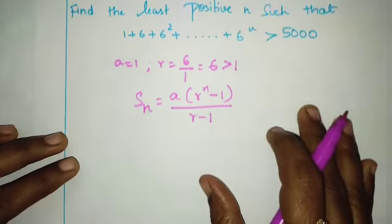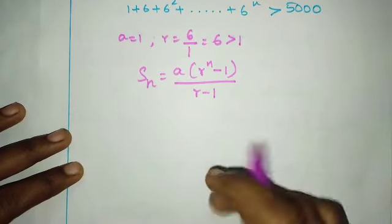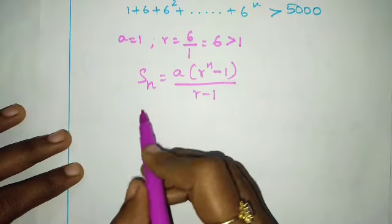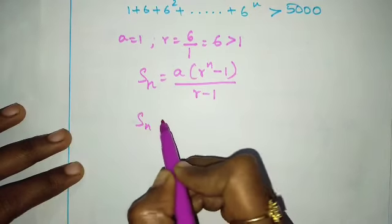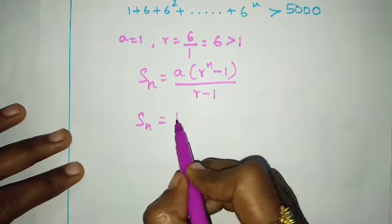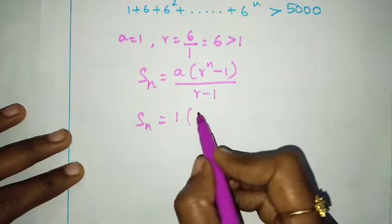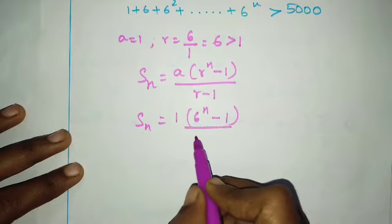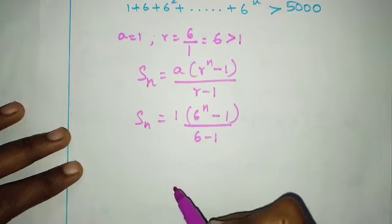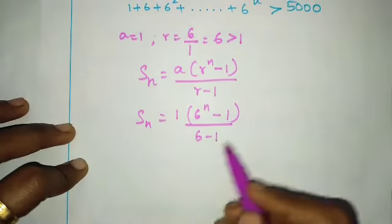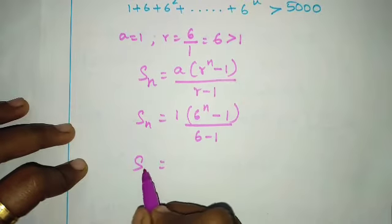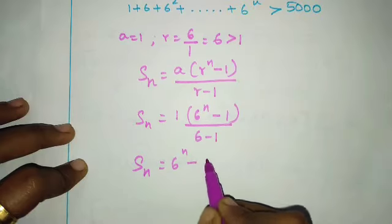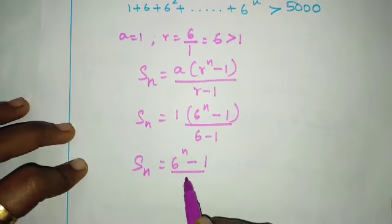Let's substitute into the formula. Sn equals a value which is 1, times 6 power n minus 1, divided by 6 minus 1. So the Sn value is 6 power n minus 1 divided by 5.